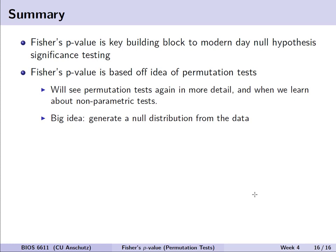In summary, Fisher's p-value is a key building block to how we actually conduct all modern-day null hypothesis significant testing, whether Fisher meant for it to be or not in the way it's currently implemented. Fisher's p-value itself is actually based on this idea of permutation tests, and so we'll see this again later in the semester in more detail when we cover and discuss nonparametric tests and related but quite different concepts like bootstrapping. The big idea to take away here is that Fisher proposed that we generate this null or permutation distribution from the data and use that to determine our significance or potential significance thereof. So, with that, we will conclude this lecture and discuss the Neyman-Pearson approach and the trade-offs in the next one.